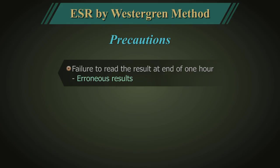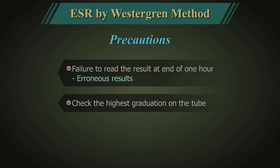Failure to read the test at exactly 1 hour will lead to erroneous results. Always check the highest graduation on the tube — this will give you the linearity of the test. If inter-lab comparisons are used as a method for proficiency testing, confirm that the other lab also performs tests with tubes of the same graduations.